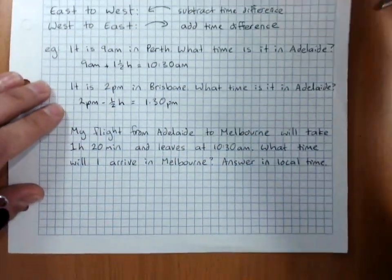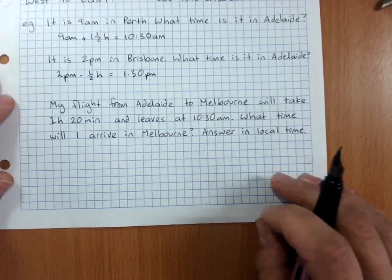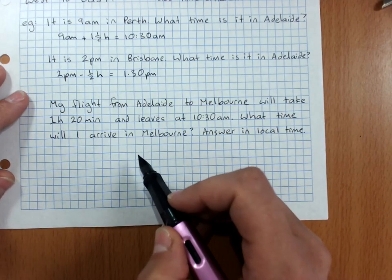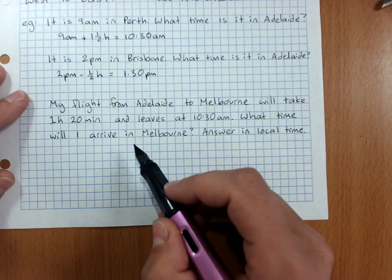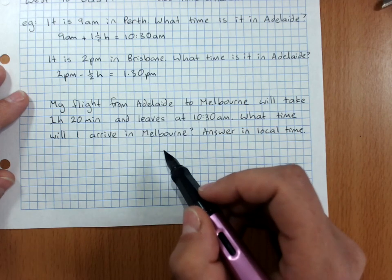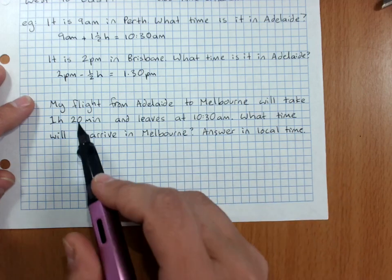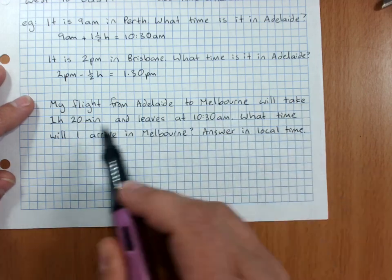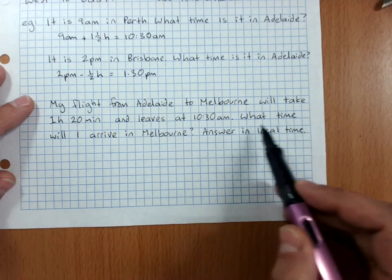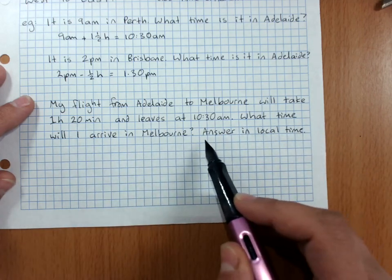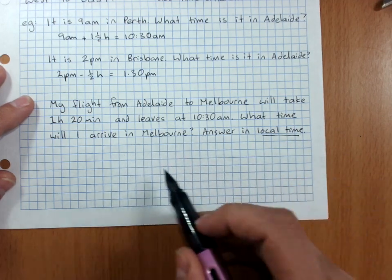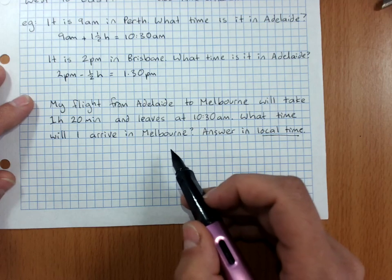The other type of calculation we often need to do is for flights. Even our calendars and apps can kind of mess us up a bit. So it's important to do a quick double check about the time when you're flying somewhere that's a different time zone.